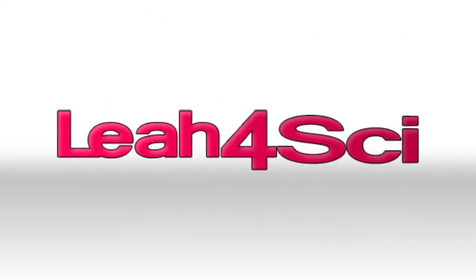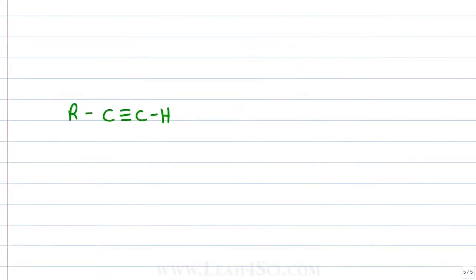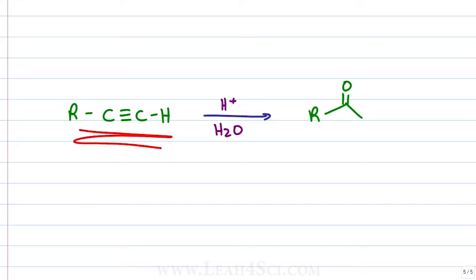Leah here from Leah4Sci.com. In this video we're going to look at the acid catalyzed hydration of alkynes reaction and mechanism. Acid catalyzed hydration of alkynes is a reaction where a starting alkyne will react with some sort of Lewis acid catalyst — I'm showing H+, but you could see H2SO4 — to give us not an alcohol but a ketone.